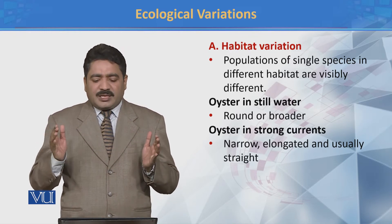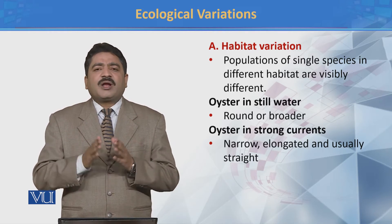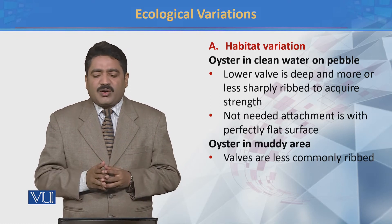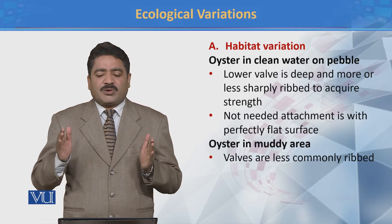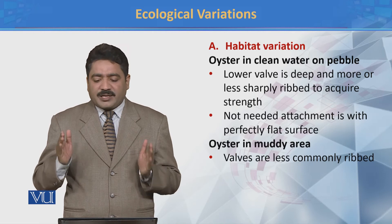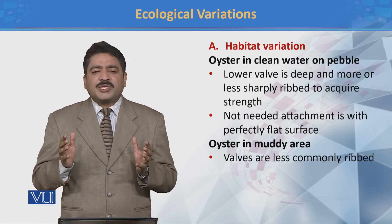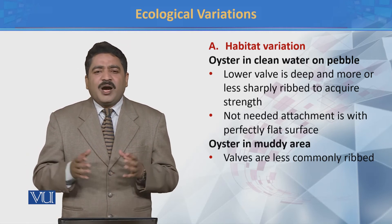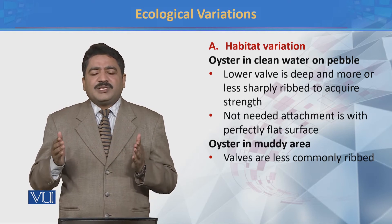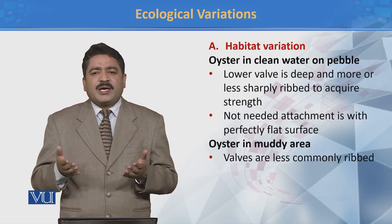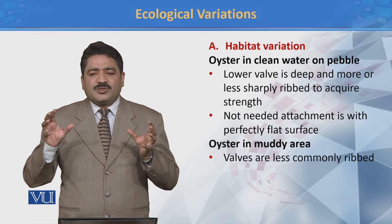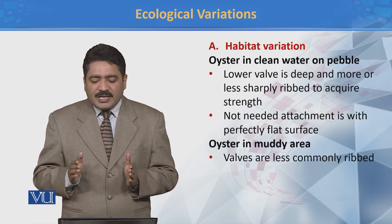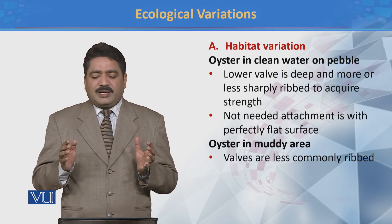If organisms are in strong water currents, they are narrow, elongated and straight. If they are in clean water with pebbles, the structure changes accordingly. But if the surface is smooth, the structure varies. If the organism is in a muddy area, the lower surface is commonly less ribbed.